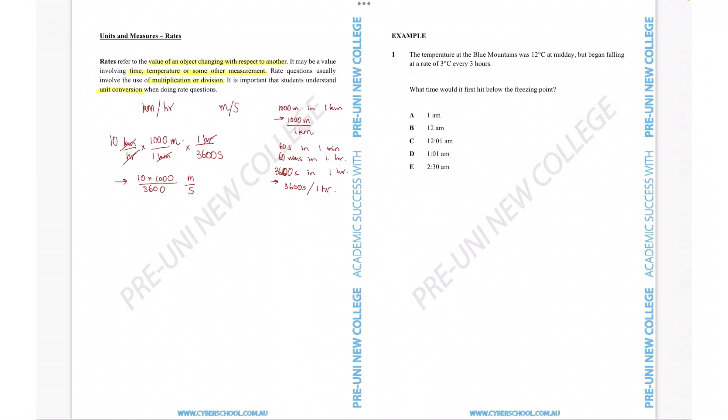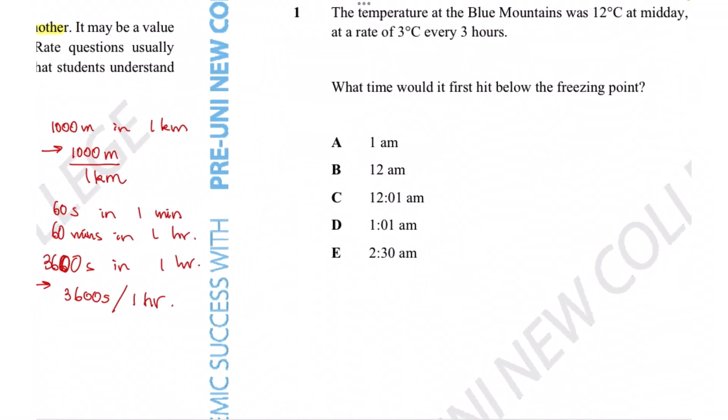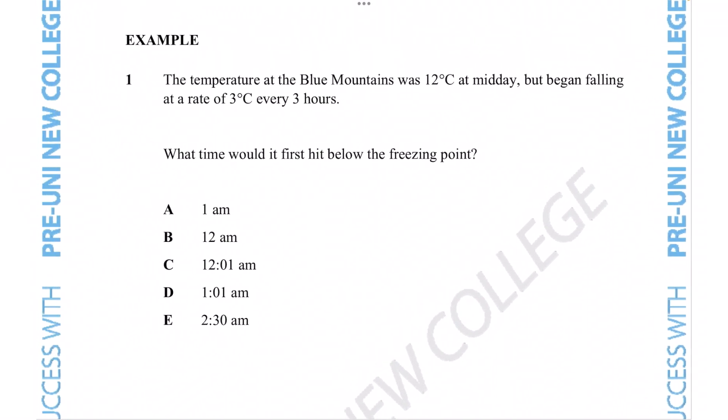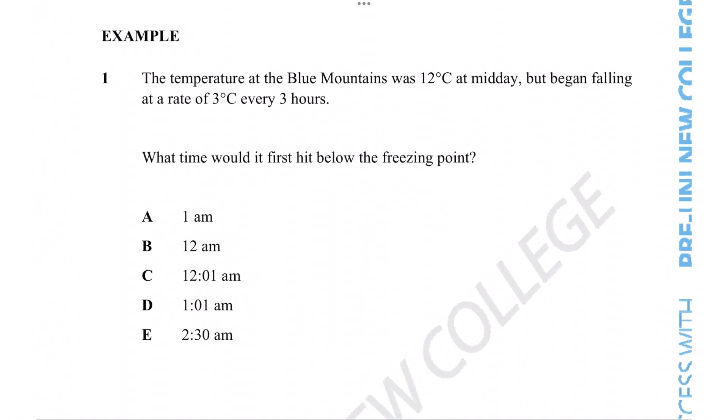Now that's enough information about rates. Let's see if we can actually apply that in this example question. The temperature at the Blue Mountains is 12 degrees at midday, but began falling at a rate of three degrees every three hours. What time would it first hit below the freezing point?